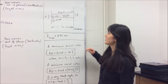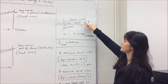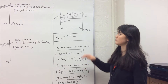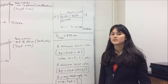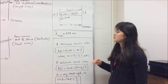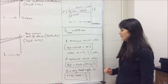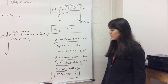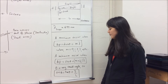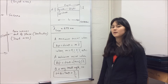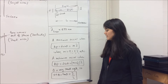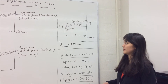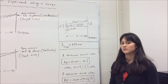Looking at this diagram, ray 1 travels a shorter distance than ray 2 to reach the same point. The difference in distances they travel is represented by d sin θ. A maximum occurs when d sin θ equals m λ, where m is any integer. A minimum occurs when d sin θ equals (m + ½)λ. Since θ is very small, we can approximate sin θ ≈ tan θ = y/L. Using all this information, we can solve for d, which is the slit width.